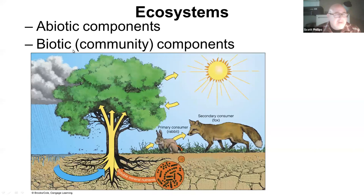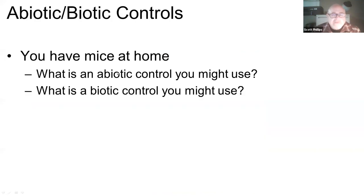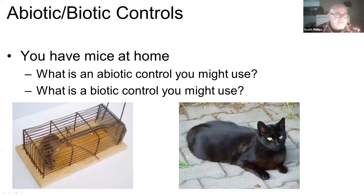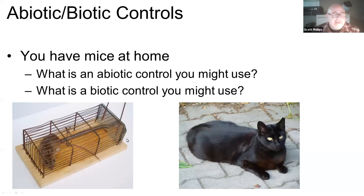Ecosystems also have living parts, called the biotic components. Here's a little illustration to talk about abiotic versus biotic. Let's say you have mice at home and you want to control them. A mousetrap might be an abiotic control because it's non-living. A cat would be a biotic control — when one living thing is influencing another, like a cat influencing mice, that's a biotic control. If it's something non-living, that's abiotic.